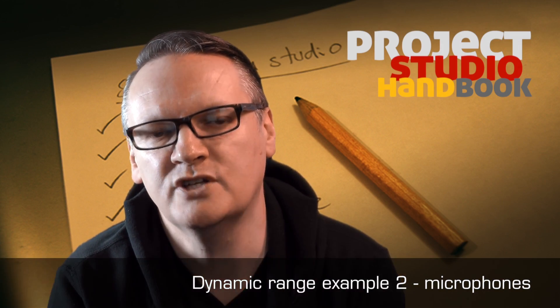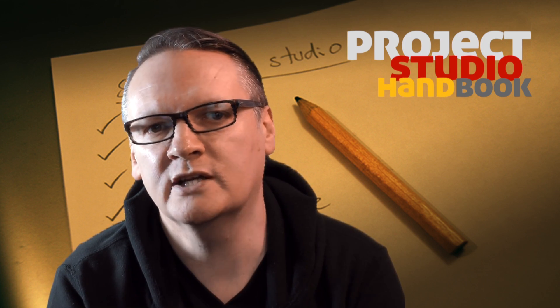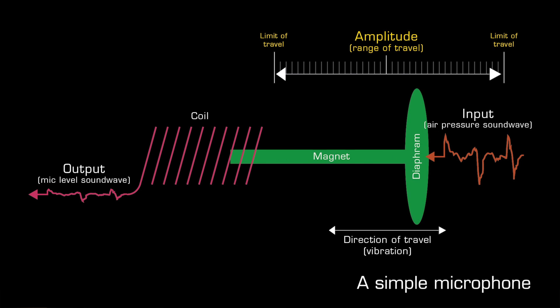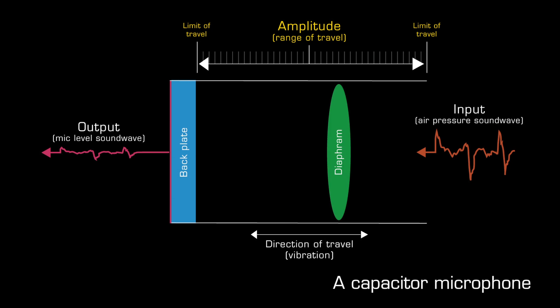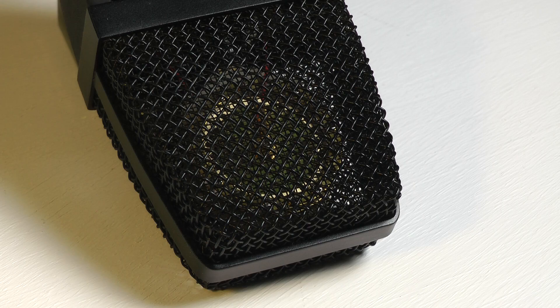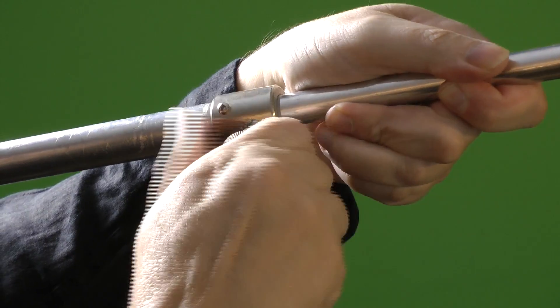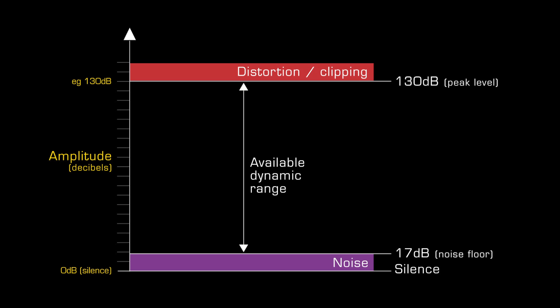A microphone's dynamic range is defined by its noise floor, its sensitivity to sound, and the maximum peak level signal it can accommodate. Most microphones use an arrangement of a moving diaphragm and magnets to convert sound waves in the air into electrical signals. The maximum travel of the diaphragm defines its peak level, and the efficiency of its electronics and design define its noise floor. For example, the SE Electronics SE4400 has excellent dynamic range and noise specifications. It can handle sound pressure levels of 130 dB and its noise floor is at 17 dB — the difference between these levels is its dynamic range.